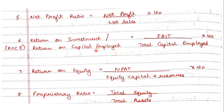Remember, if you have any ratio related to the income statement it will always be upon sales into 100. Next, these are important ones — return on investment or return on capital employed, also known as ROCE. The formula is EBIT (earnings before interest and tax) upon total capital employed. Capital employed can be net owners' funds plus borrowed funds, or fixed assets plus current assets plus investments less current liabilities, into 100.